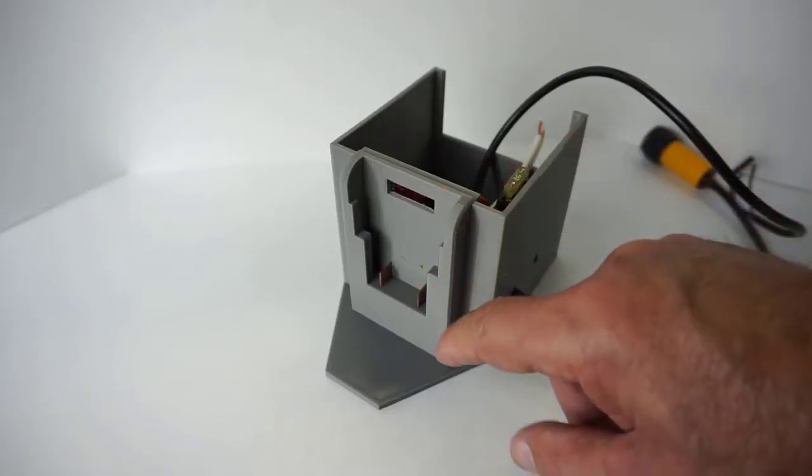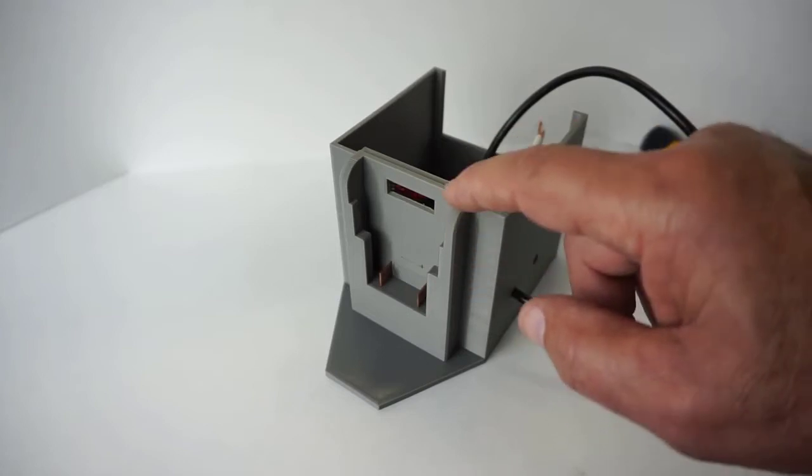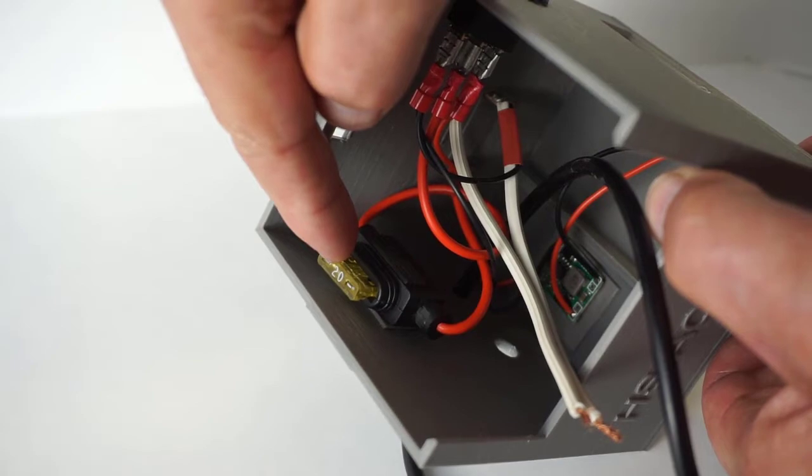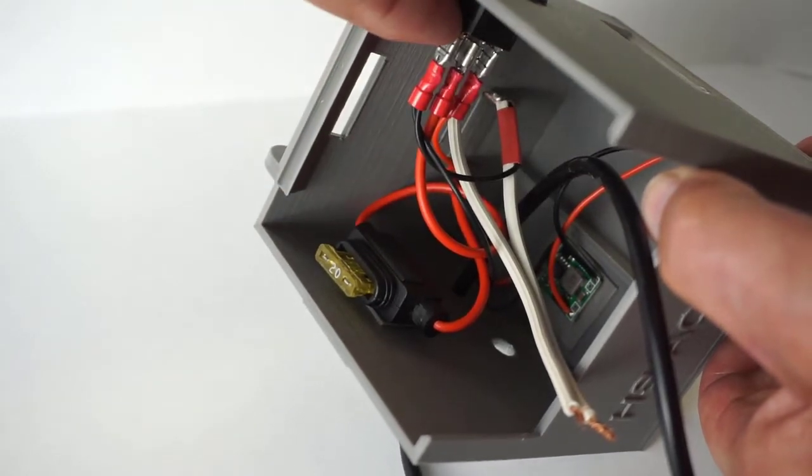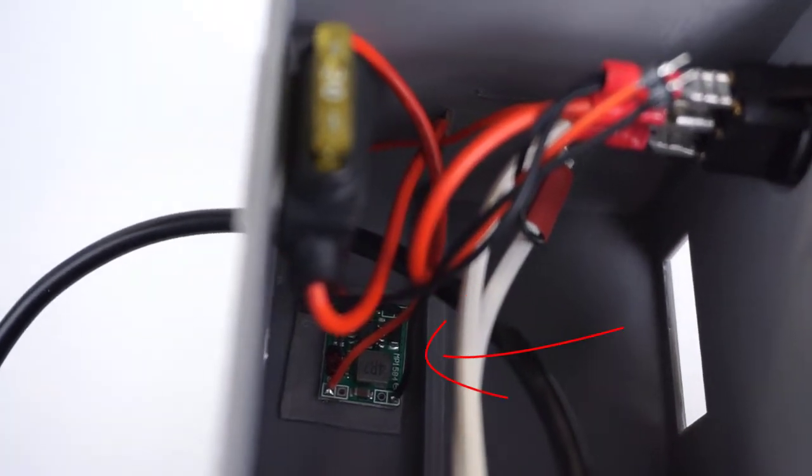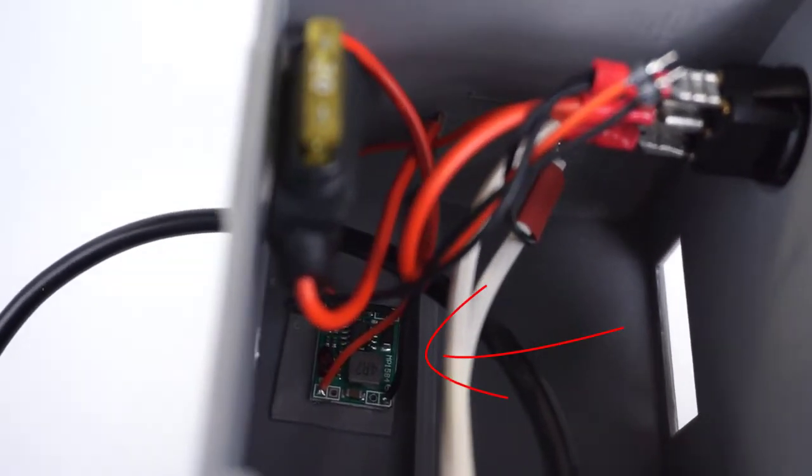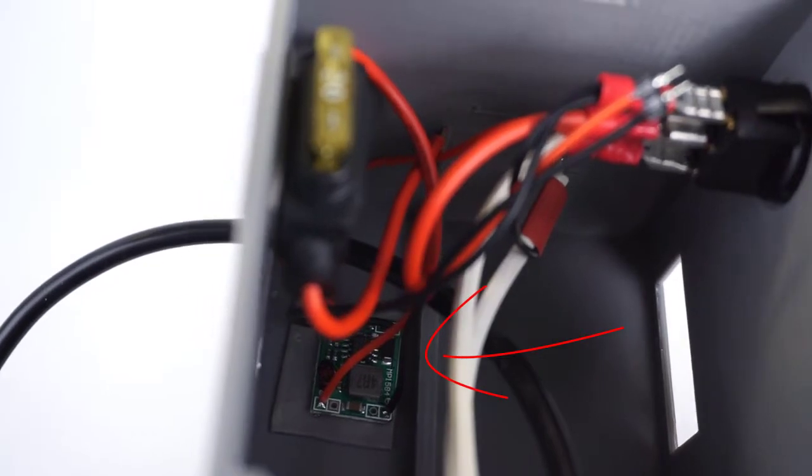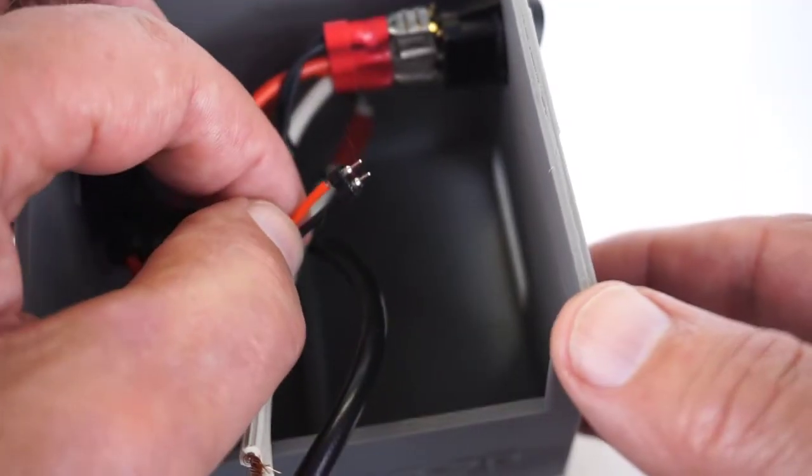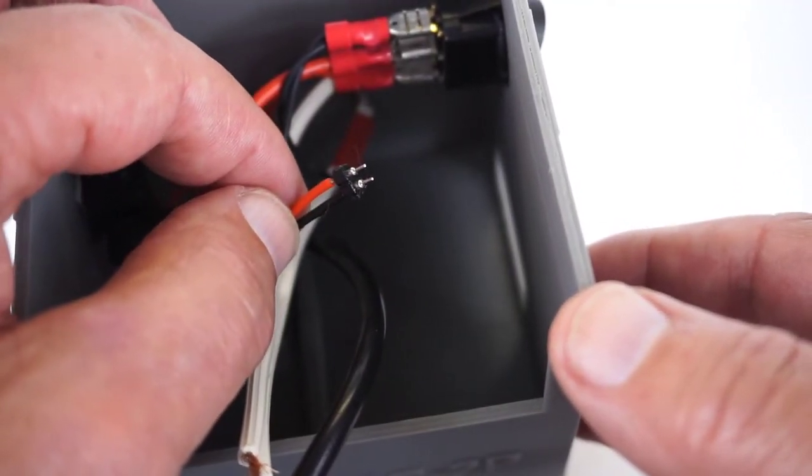You guys have already seen this 20 volt Dewalt lithium battery interface before on the channel. Power from the battery goes through this 20 amp fuse prior to going to the switch. From the switch, it goes to the small MP1584 buck converter that you see, double adhesive to the bottom of the case. The output is set to 5 volt and plugs onto the PCB board.